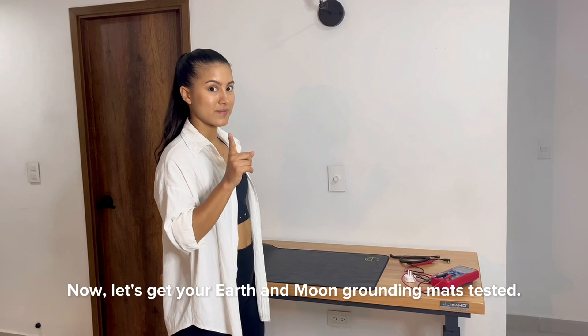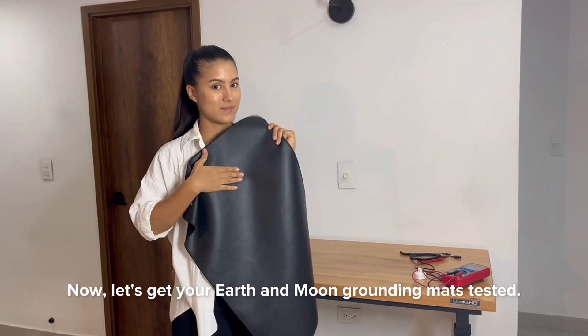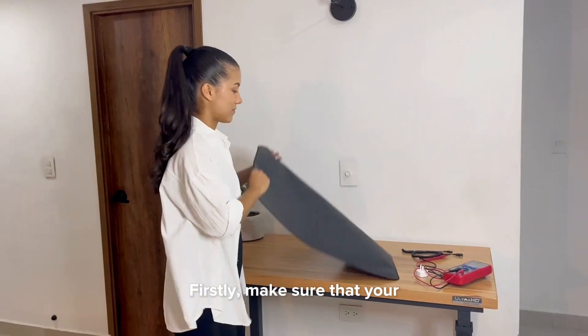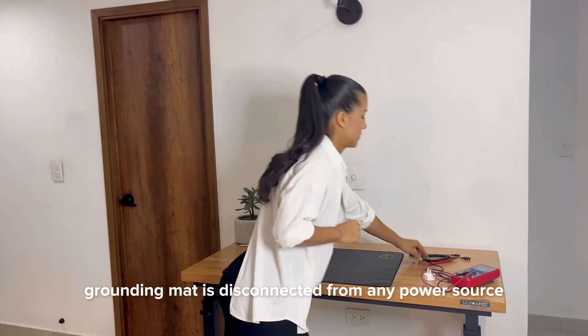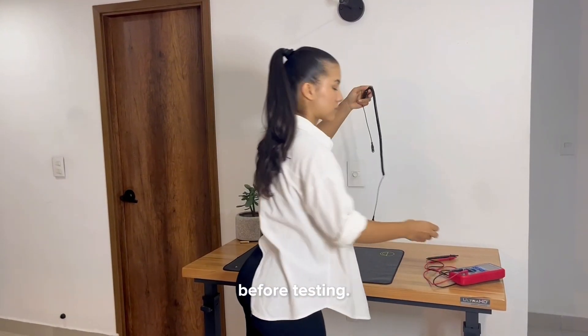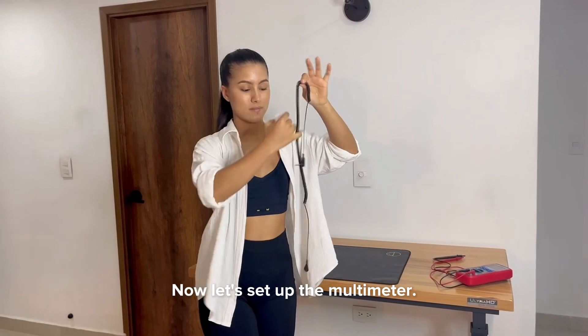Now, let's get your Earth and Moon grounding mats tested. First, make sure that your grounding mat is disconnected from any power source before testing. Now, let's set up the multimeter.